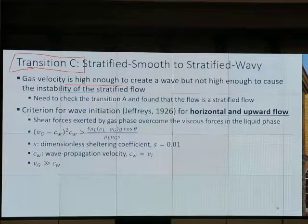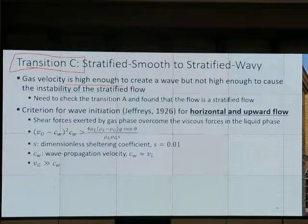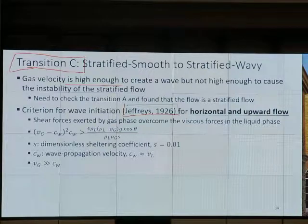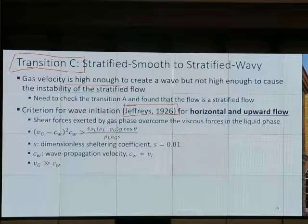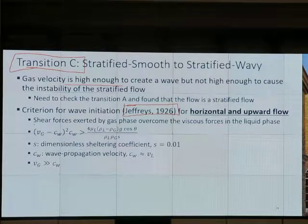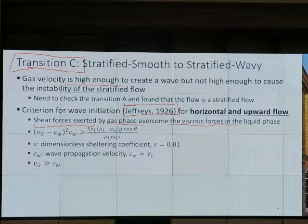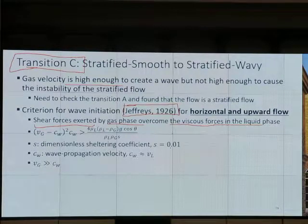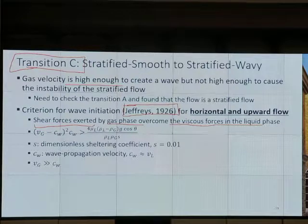If you check transition C after A and it shows stratified flow, you go straight to transition C. If A says it is stratified flow, we go directly to C, not B. The criteria for wave initiation - Taitel-Dukler use Jeffreys. This is suitable for horizontal and upward flow. It is the initiation of wave caused by the shear force exerted by gas phase overcoming viscous forces of the liquid phase. If it is so viscous, whatever we blow it, it doesn't form wave. So it's a competition between the shear force from the gas and the viscous force that holds it together in the liquid phase. Make sure you know this.